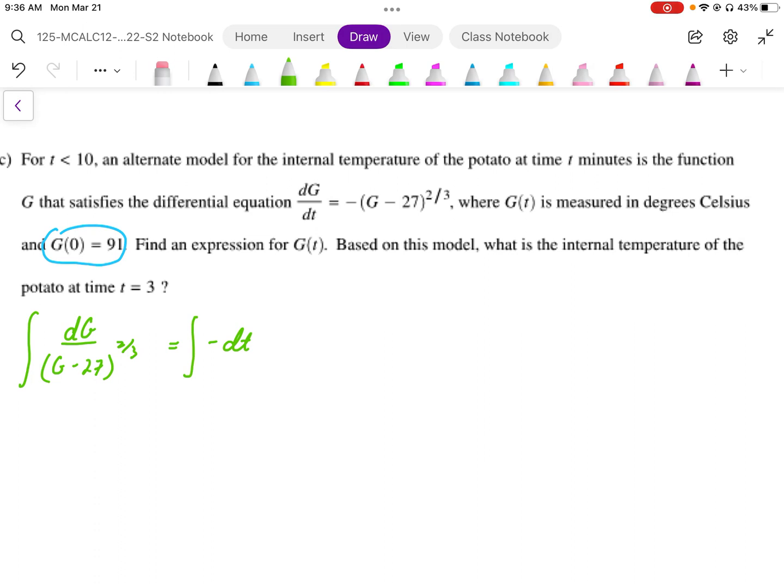We find the anti-derivative of this. So this is power negative 2/3, so we're going to end up with (G minus 27). We're going to add 1 to get power of 1/3, and then divide by 1/3, which gives us 3. That's going to equal negative t plus C.